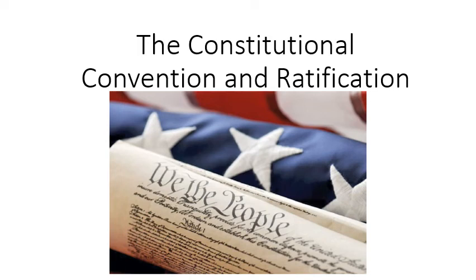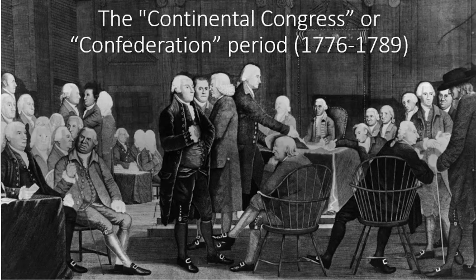Today's lesson is the Constitutional Convention and the Ratification Process. I want to start by talking about the conditions leading up to the Convention and the writing of the Constitution and why some people thought it was necessary. First, just an overview of the Continental Congress period or the Confederation period — the period of about 13 years from the Declaration of Independence until the ratification and implementation of the Constitution.